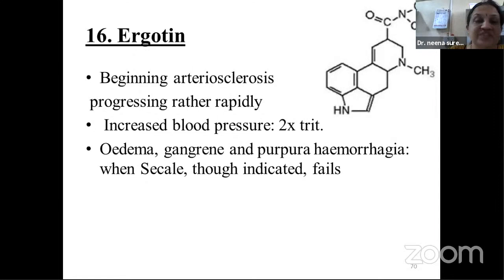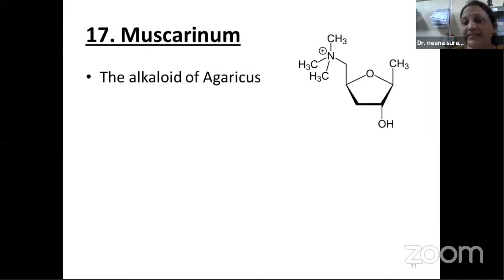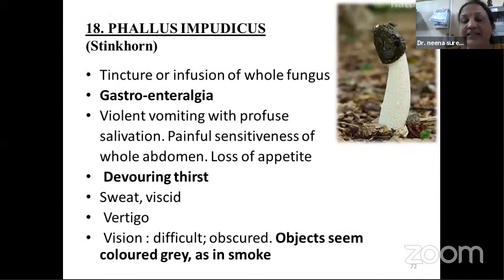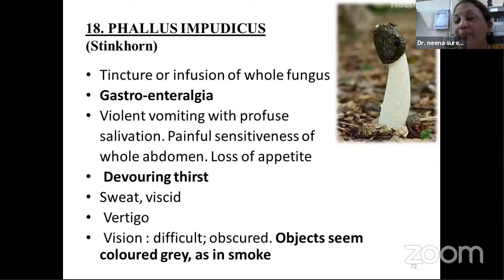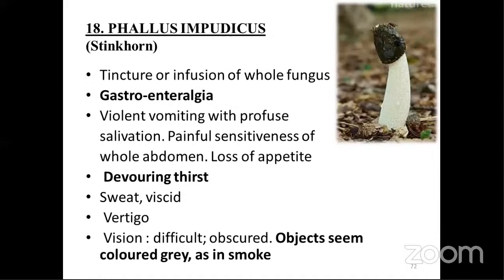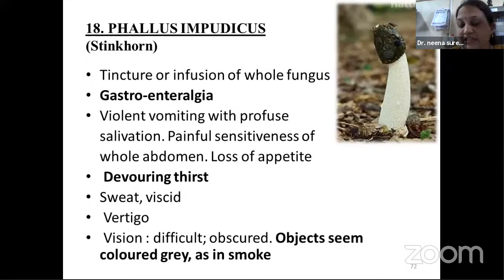Seventeenth: Muscarinum — the alkaloid of Agaricus, having common features. Eighteenth: Phallus imbudicus — common name Stinkhorn. Indication in gastroenteralgia — violent vomiting with profuse salivation; painful sensitiveness of whole abdomen with loss of appetite; devering thirst; vertigo and vision affected — objects seem colored gray as if in smoke.